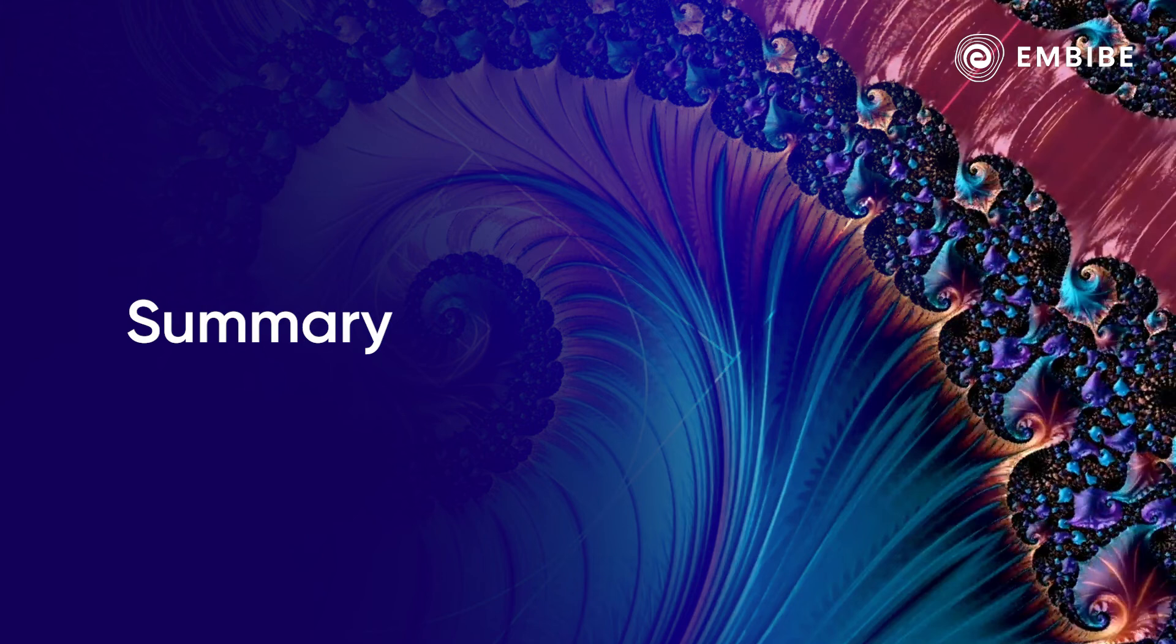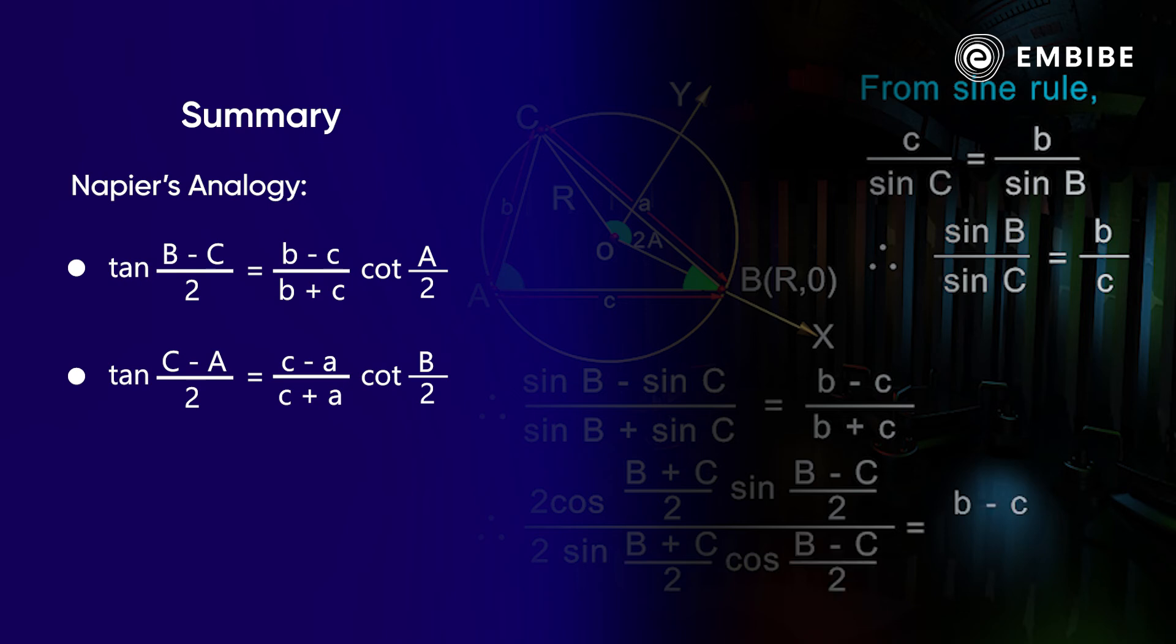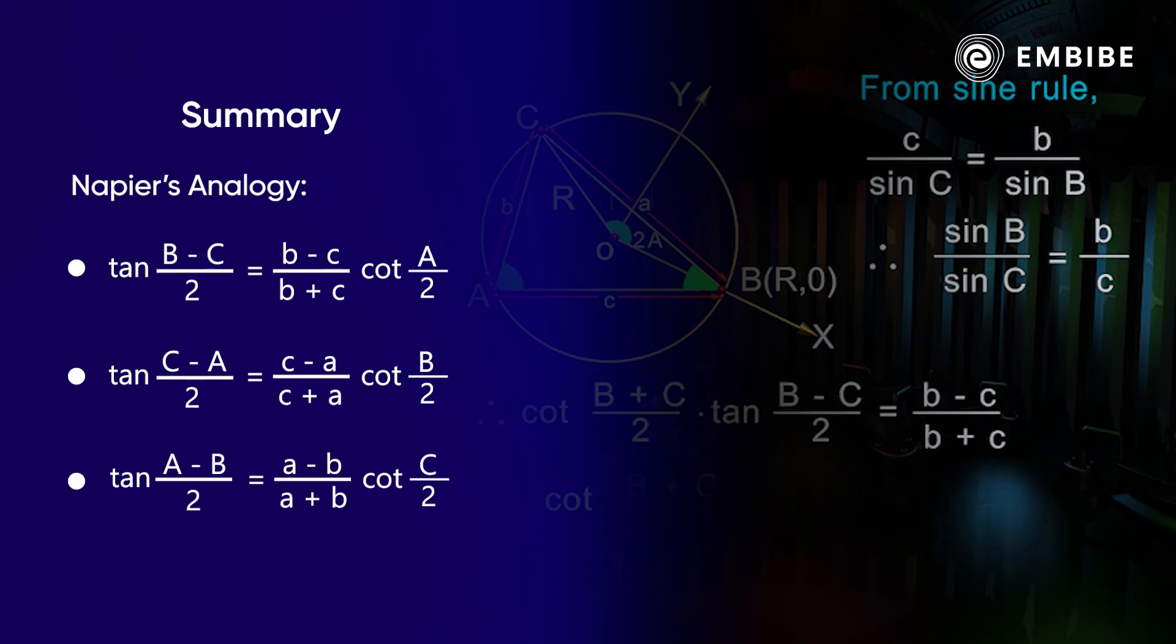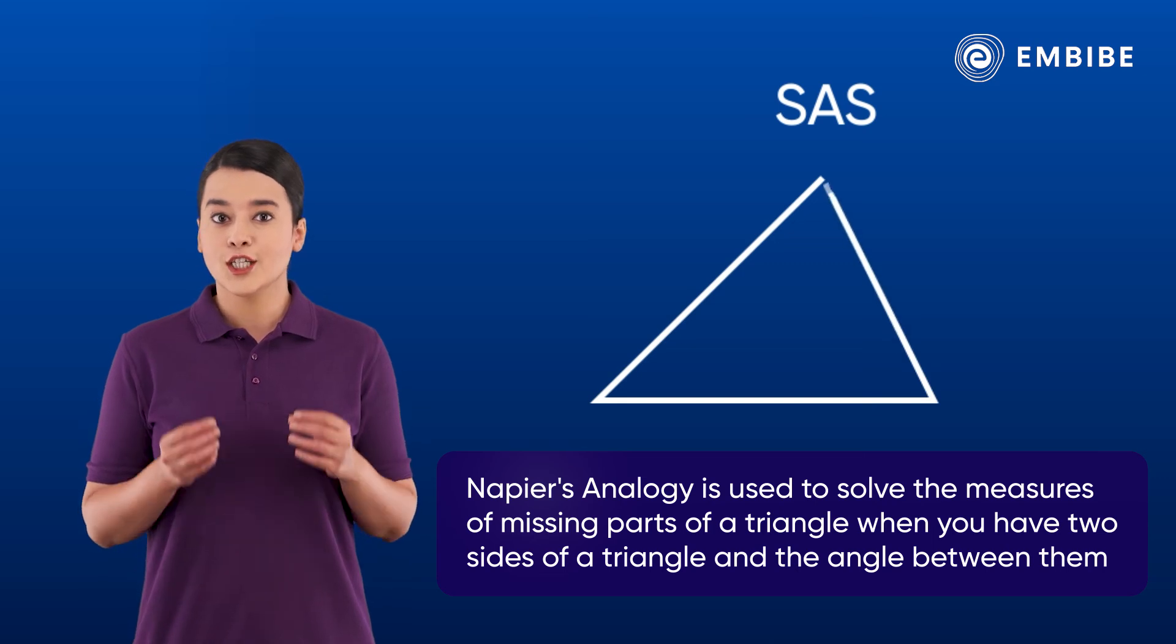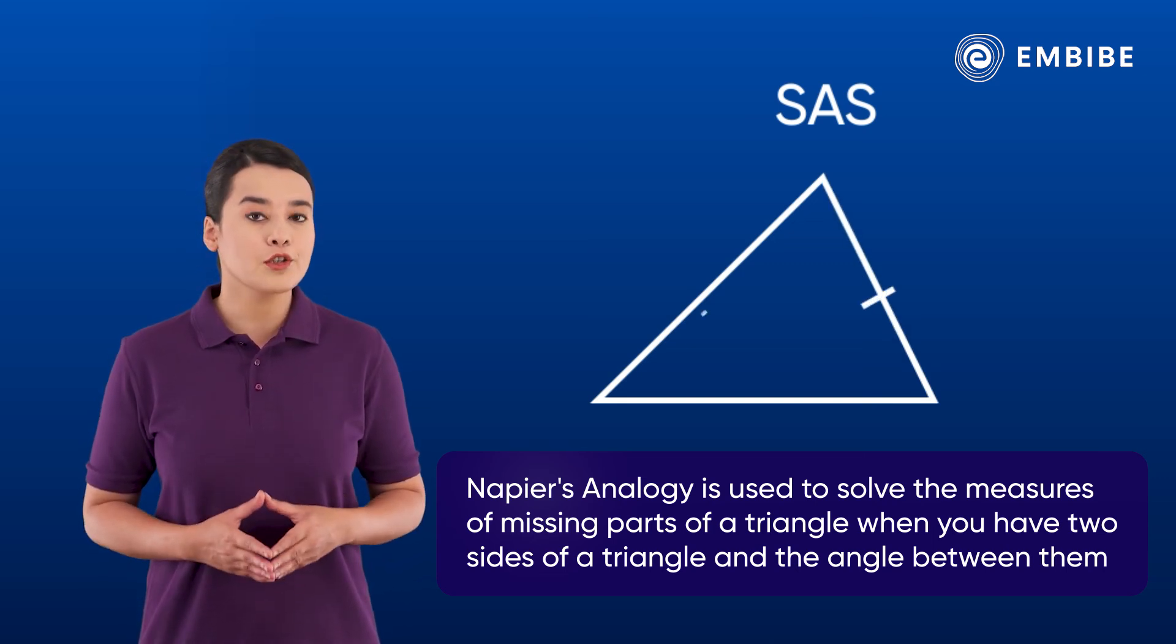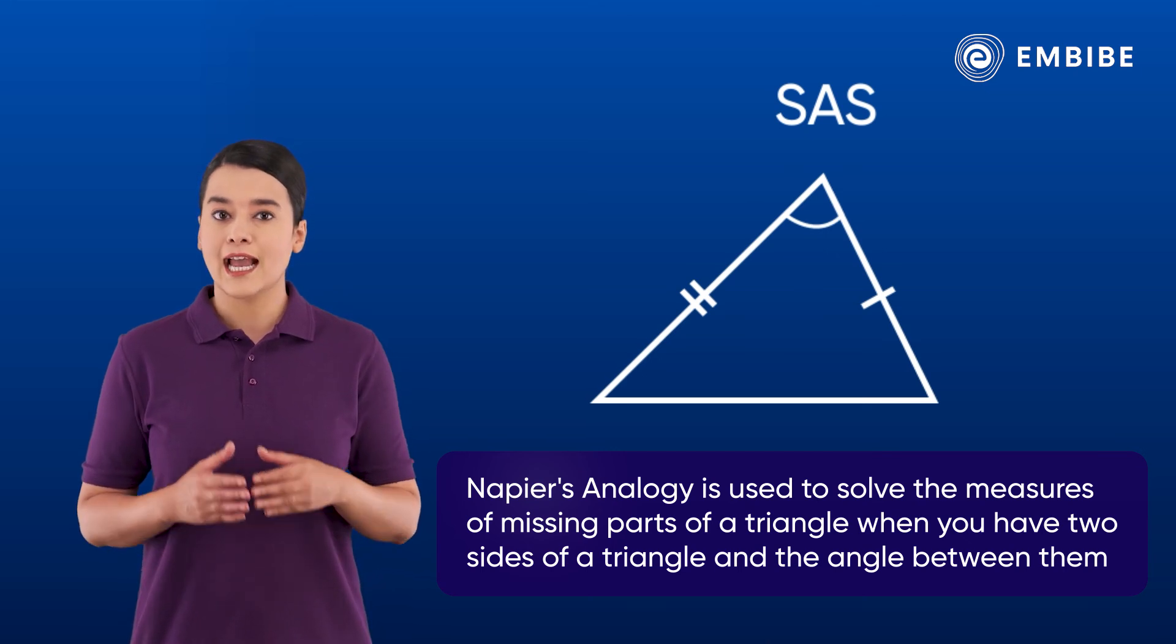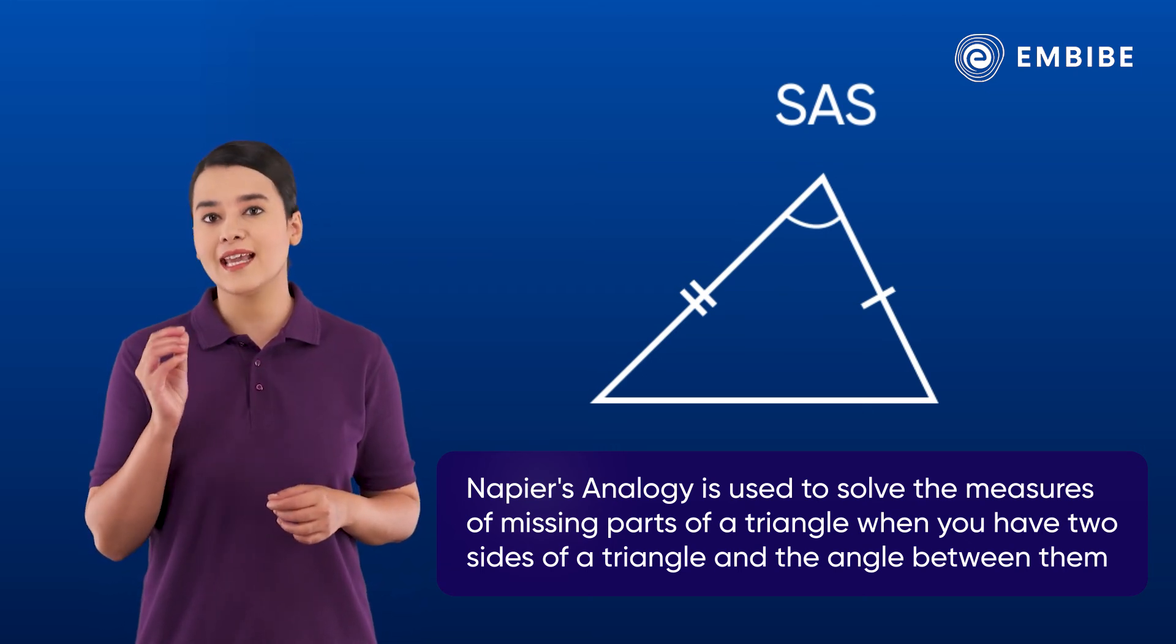Let's summarize. In this session we've learned about Napier's analogy. Now that you've learned about Napier's analogy, you can use it to solve the measures of missing parts of a triangle when you have two sides of a triangle and the angle between them, referred to as SAS, side-angle-side.